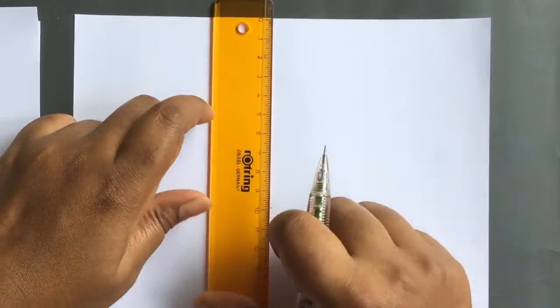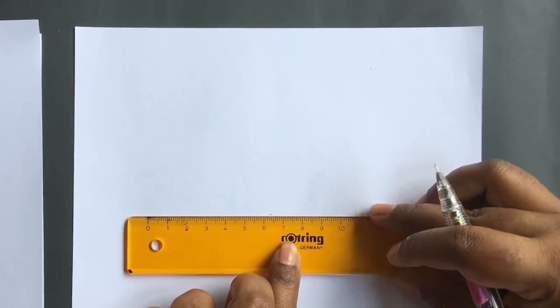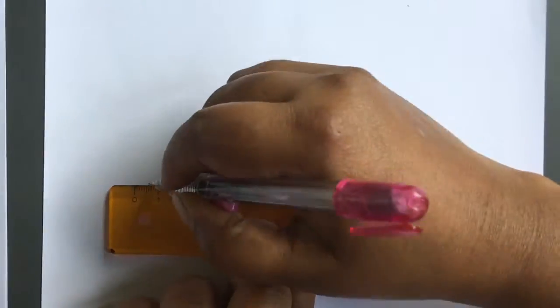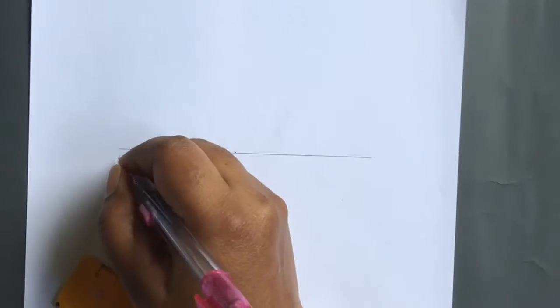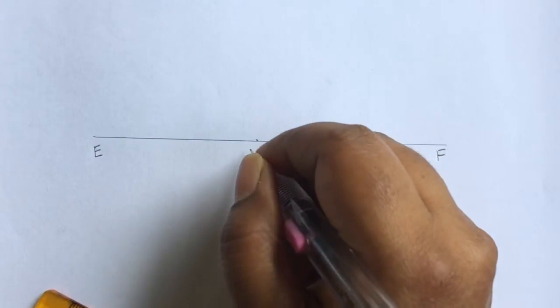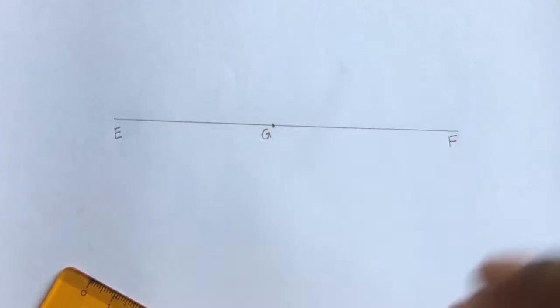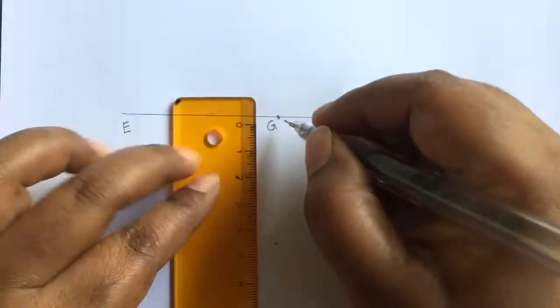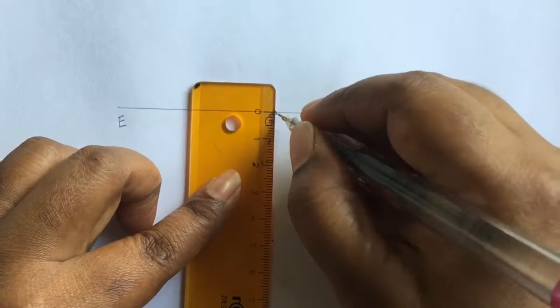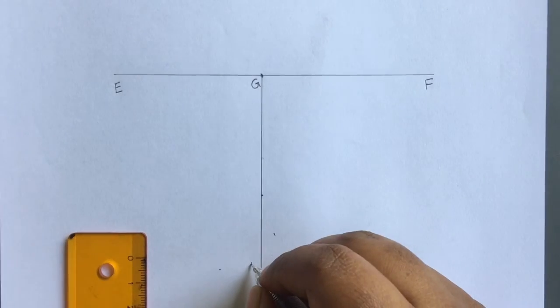Measure 10 cm from the top of the sheet and mark the point. Draw a line through this point. Name it as EF. Mark a point G approximately at the center of the line EF. Draw a line perpendicular to EF through G and label it as GH.